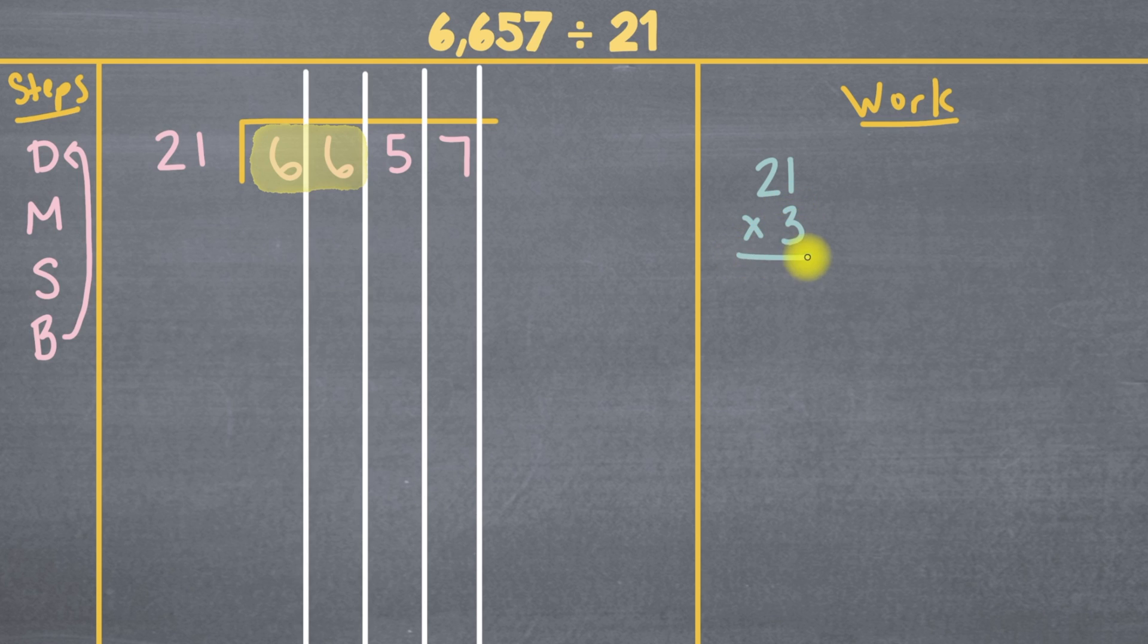Let's try that in our work area. So 3 times 1 is 3, and 3 times 2 is 6. That's perfect. That's just under 66. So now what we'll do is we'll take this number 3 and we'll put it up here. Because as we saw, 21 times 3 gives us 63. And we'll write that here.